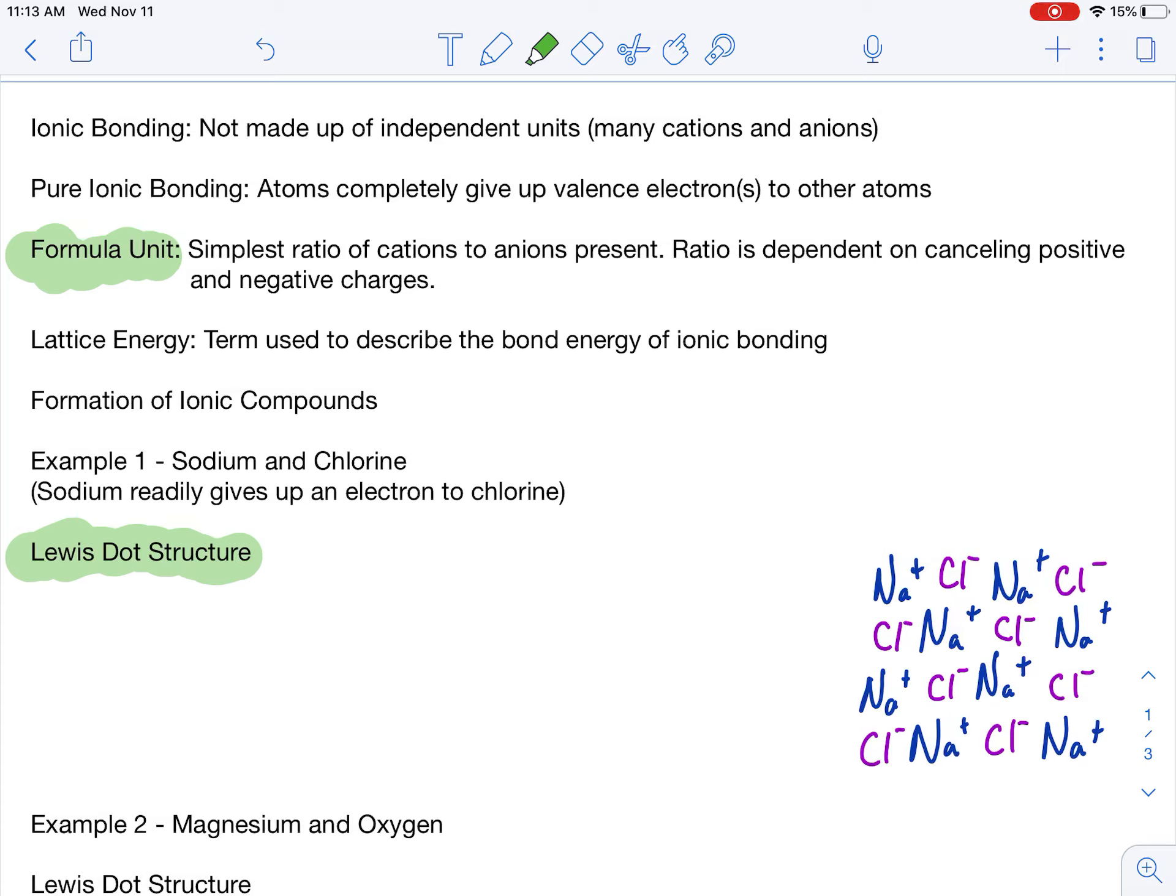Lattice energy is a term used to describe the bond energy of ionic bonding. So it's not an individual sodium and chlorine bonded together. It's actually many, many, many. So we need something called lattice energy to describe the actual energy of the bonds. And now we're leading into the formation of ionic compounds. So we're going to go through three examples today and show you how the electrons travel from one atom to another atom and what's required when I ask you to draw Lewis dot structures.